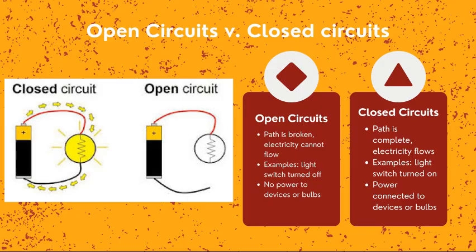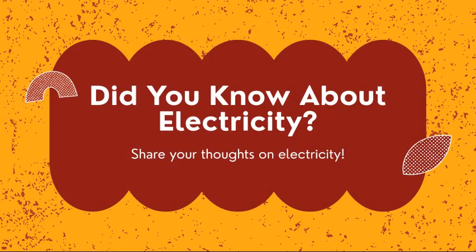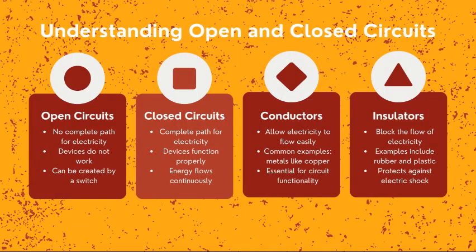To review: open circuits have no complete path, the devices do not work, and can be created with a switch. Closed circuits have a complete path for the electricity to flow, the device is on and working, and energy flows through continuously. Conductors allow electricity to flow through easily, while insulators do not.